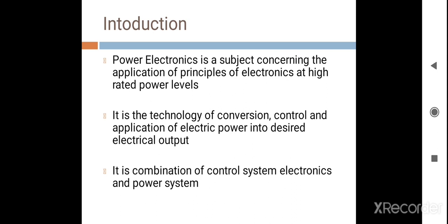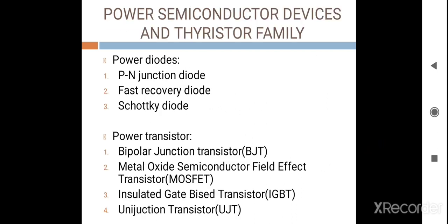Power Electronics is a combination of two systems. One is Control System Electronics and the second is Power System. In this subject, we will study different types of Power Semiconductor Devices and Thyristor Family.